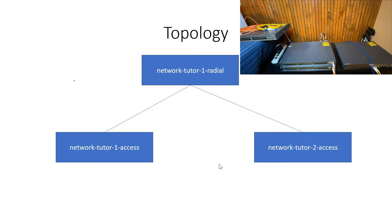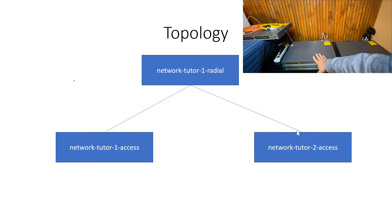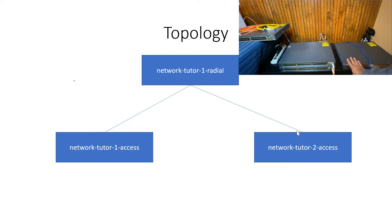In this video, I'm going to show you how to establish a fiber link connection between two switches. This is the topology I'm using. I have a radial on the top and two access switches on the bottom. I already have a fiber link connection running between the network-tutor-one access and network-tutor-one radial. This is the new switch I'm introducing into the topology.